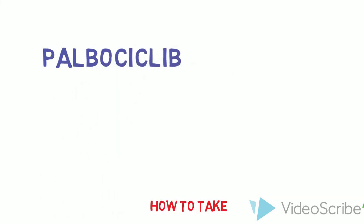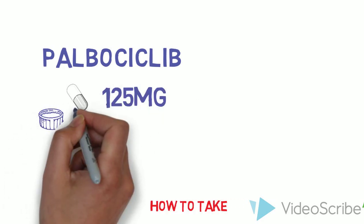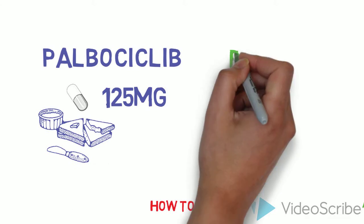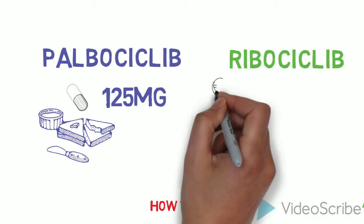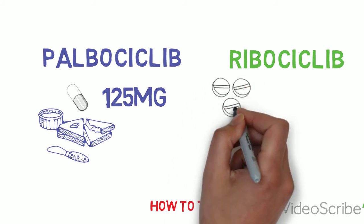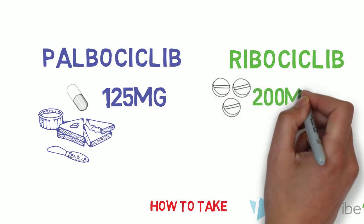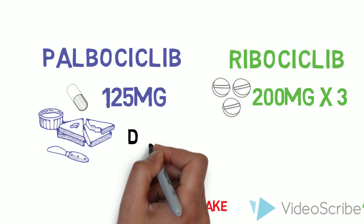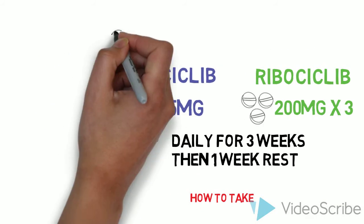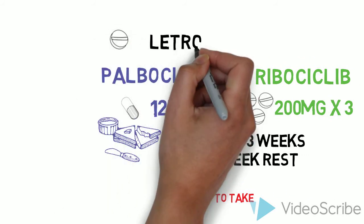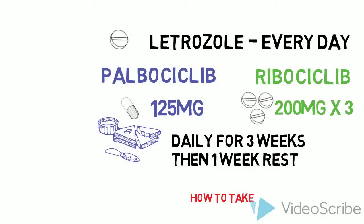Palbocyclib is taken as a single 125mg capsule with food. Ribocyclib is taken as three 200mg tablets. It doesn't matter whether you take it with food or not. Both are taken once daily for three weeks, followed by a seven day rest period. All patients take 2.5mg of letrozole for the full 28 days of the cycle.